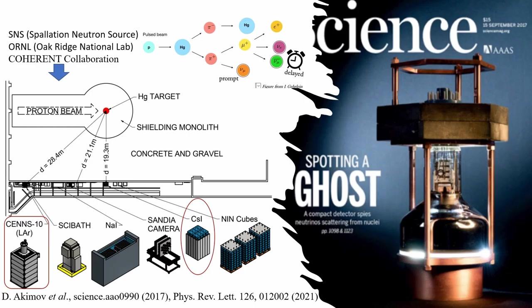That's why CEvNS was only observed recently by the COHERENT Collaboration at the Spallation Neutron Source in Oak Ridge National Lab, where a proton beam strikes a mercury target, generating a lot of pions and muons which decay at rest into neutrinos. A small cesium iodide detector observed CEvNS in 2017, and this year we published the result of observing CEvNS in a small liquid argon detector.